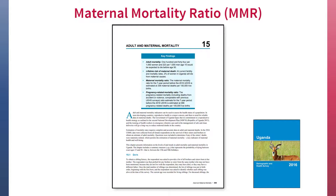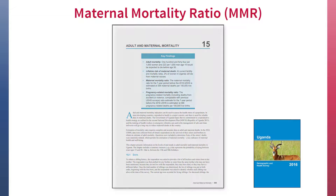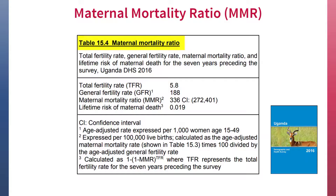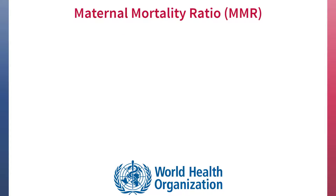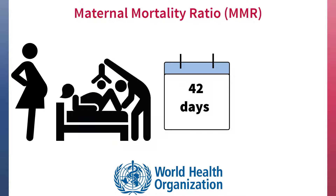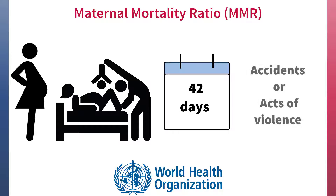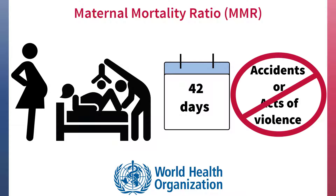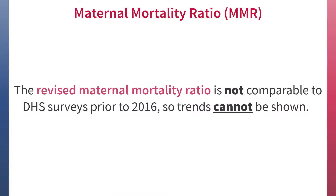The maternal mortality ratio is shown in the DHS Final Report chapter on Adult and Maternal Mortality, typically in a table titled Maternal Mortality Ratio. This MMR aligns with the WHO's definition — deaths of women while pregnant, during childbirth, or within 42 days of delivery or end of pregnancy — now with deaths due to accidents and acts of violence identified and then omitted from the calculation. This maternal mortality ratio is not comparable with surveys conducted prior to 2016, so trends cannot be shown.